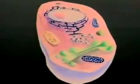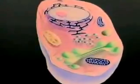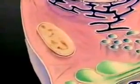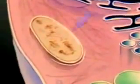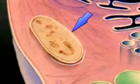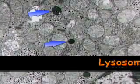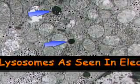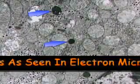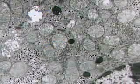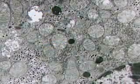Lysosomes are membrane-enclosed vesicles that form in the Golgi apparatus. They may contain over 40 different powerful enzymes that enable the cell to digest and destroy large molecules. Lysosomes help white blood cells destroy foreign substances, such as viruses and bacteria that invade the body. Lysosomes also recycle older or damaged organelles.